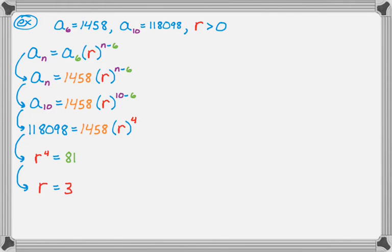So I'm going to go to the second line, a sub n is 1458 r to the n minus 6, and plug in for r. So a sub n is 1458 times 3 to the n minus 6. So that's one version of the answer. But remember, I made a choice when I used a sub 6. I actually could have used a sub 10 and done all the work. It would have worked out essentially the same.